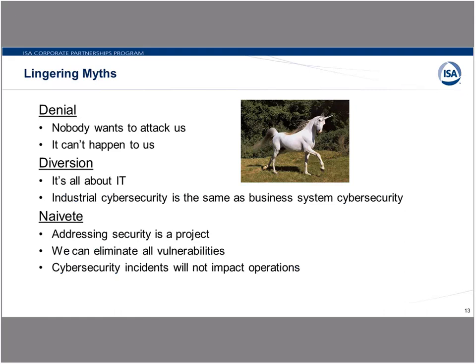There are some myths that tend to linger. The one I hear consistently is, well, no one would want to attack us. We're a small plant in some remote location, and there's nothing to be gained by attacking us. That may be true, but it really doesn't matter, because as we've seen with attacks like WannaCry, those kinds of attacks are not particularly focused on a specific target. They're released and wherever they happen to hit, you're sort of collateral damage from non-specific attacks. So it may not have been directed at you specifically, but nonetheless you're affected by it.